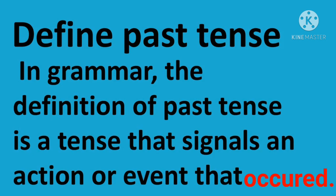Now let's discuss about what is past tense. In grammar, the definition of past tense is a tense that signals an action or event that occurred. The past tense is a verb tense used for a past activity or a past state of being. For example, 'I jumped in the lake' — this is a past activity. 'Jumped' — we add -ed to the present tense verb 'jump'.